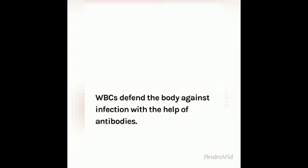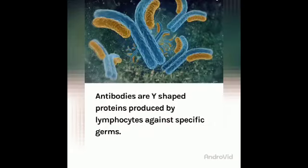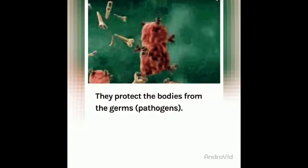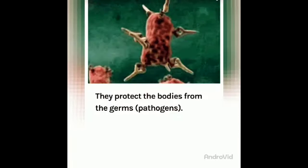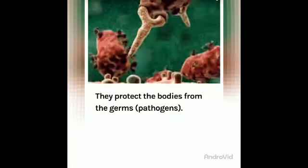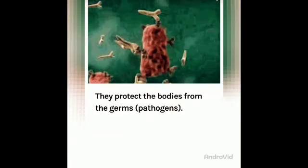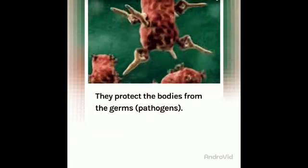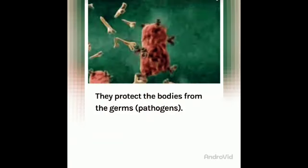WBCs defend the body against infection with the help of antibodies. Antibodies are Y-shaped proteins produced by lymphocytes against specific germs. Here you can see the picture of Y-shaped antibodies. They protect the body from germs, which are basically the pathogens. Here you can see they are attached on the antibody sites.